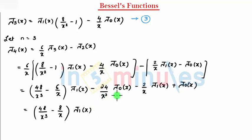And the second term: you can take J0 common. So that becomes (1 - 24/x²) J0(x).